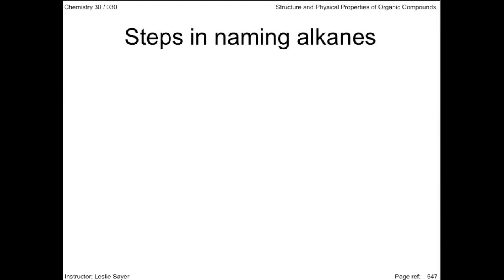Steps in naming alkanes. Let's summarize the procedure involved in naming alkanes. Firstly, we'll identify the root name. Find the longest continuous chain of carbon atoms — and remember it doesn't have to be straight — and apply the root name.